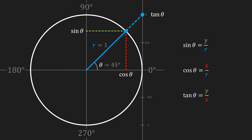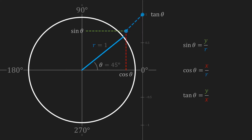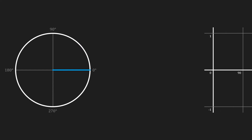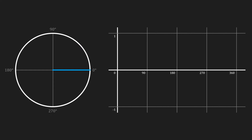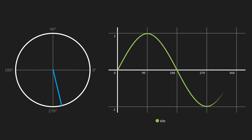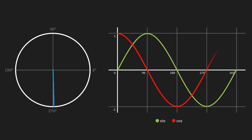To take this one step further we can make a graph that contains the values for the sine, cosine and tangent for every possible angle. Let's take a graph and first plot the values for the sine. As you can see it has a range from negative 1 to 1 over the course of 360 degrees. Let's do the same thing for the cosine, which also has a range from negative 1 to 1.